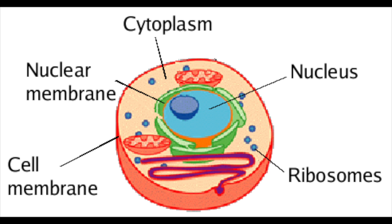Hi guys, it's Zymestark, and today we are learning about cells — specifically about animal and plant cells and what the differences are between the two. First of all, we're going to look at animal cells, which are all around us. They're in humans and every single animal, and they are very small of course.